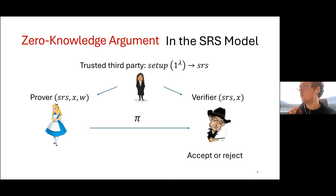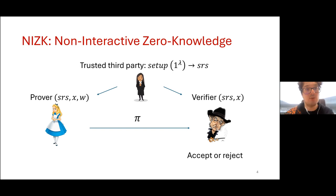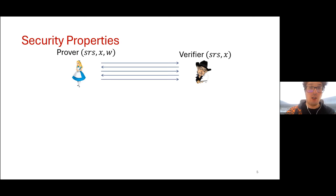If on top of that we require no interaction from the verifier — so we require that the prover computes the proof in one message and sends it to the verifier — then we have a NIZK, a non-interactive zero-knowledge argument.